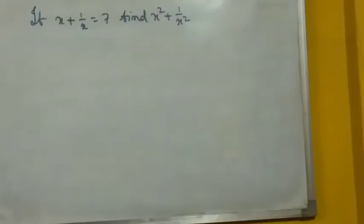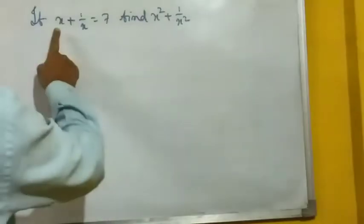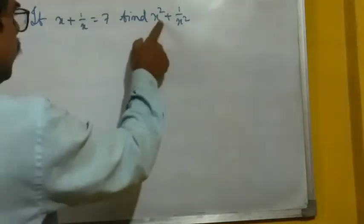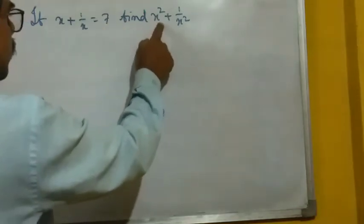And now we will do some special sums like that. x plus 1 by x equal to 7, find the value of x square plus 1 by x square.